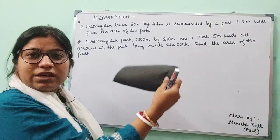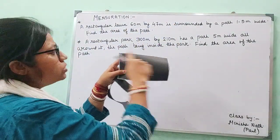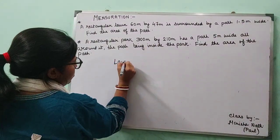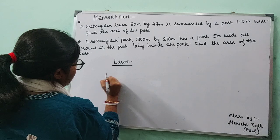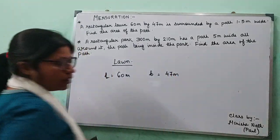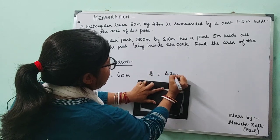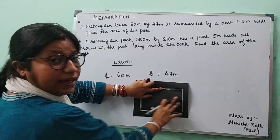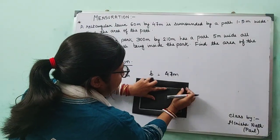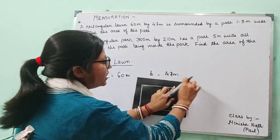Now imagine this was given to you — the lawn. The dimensions of the lawn were given to you. This is the lawn whose length is 60 and breadth is 47. Now, how can we get the outer rectangle from the inner rectangle? The outer rectangle plus these two parts — if I add them, I get the length of the outer rectangle, the dimensions of the outer rectangle.